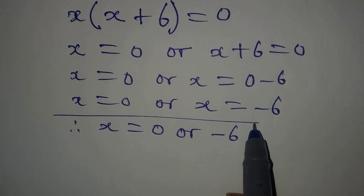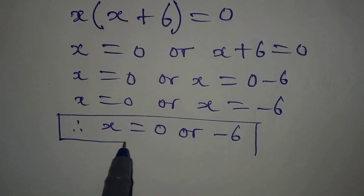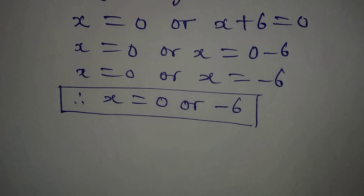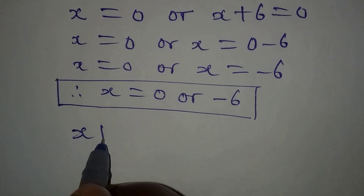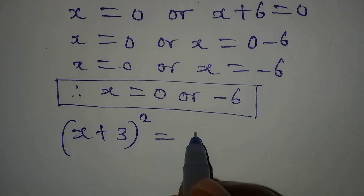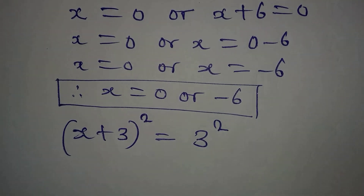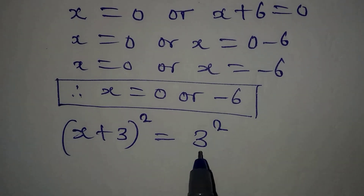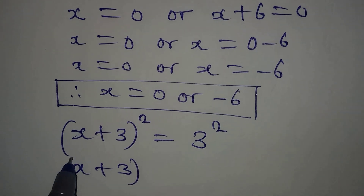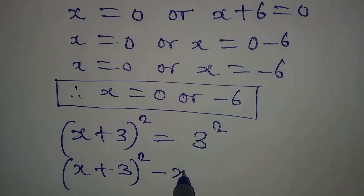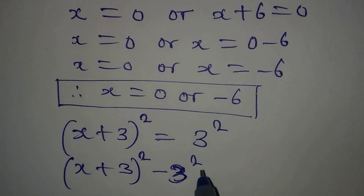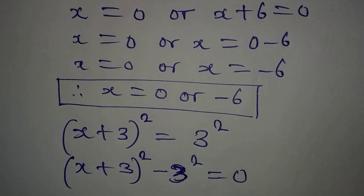I told you I was going to do this in two ways. Look at another way we can deal with this. The equation is (x + 3)² = 3². Now bring everything to the left: (x + 3)² − 3² = 0.